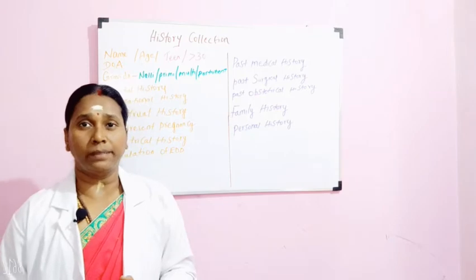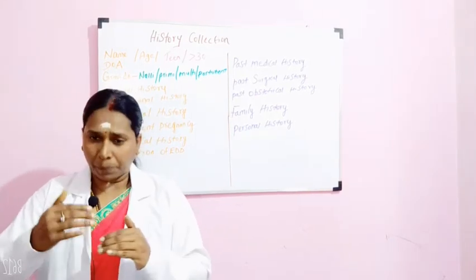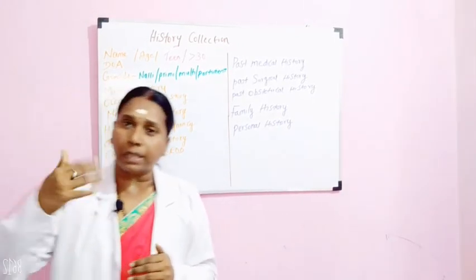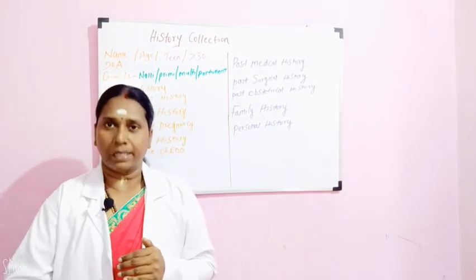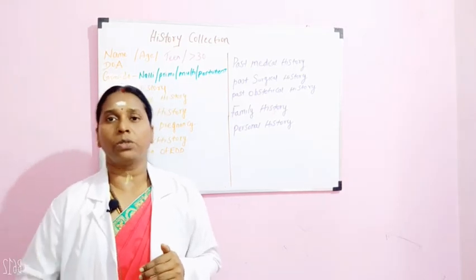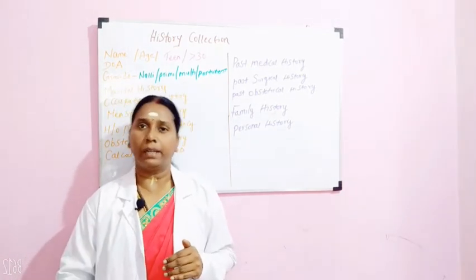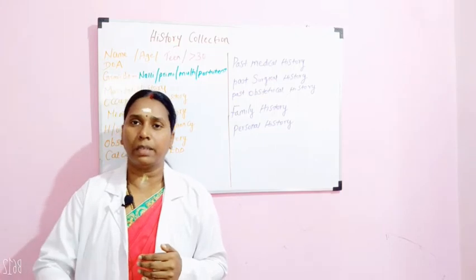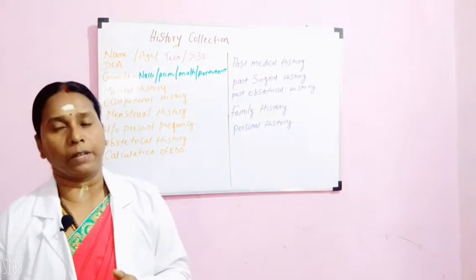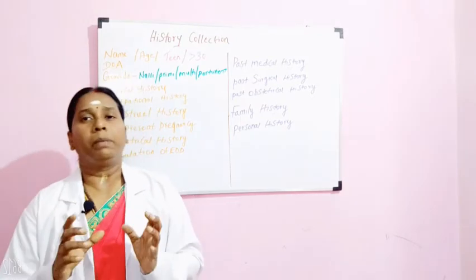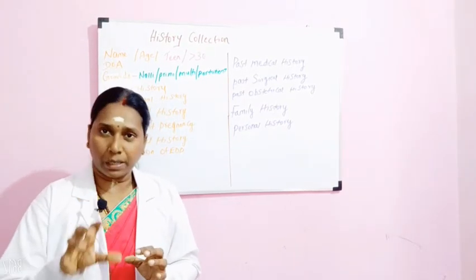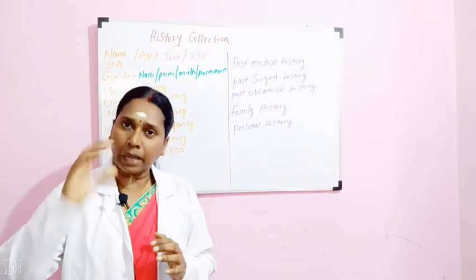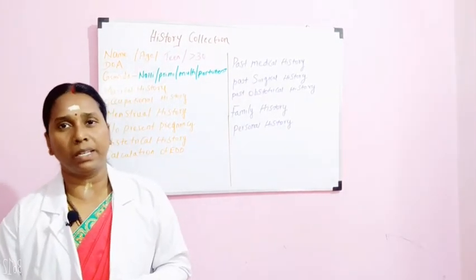When we come to the obstetrical history, it includes the plan for delivery. In case it was a previous caesarean section, she has to go in for the next caesarean section, so this will be a planned LSCS. You have to tell her when she has to come for labor. In case it was a normal delivery, after calculating the EDD you will tell her the date of confinement, when she has to be admitted, and explain the signs and symptoms of normal labor.